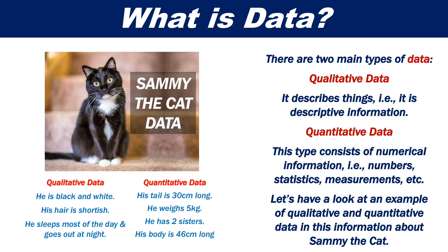There are two main types of data. Qualitative data, which describes things — that is, it is descriptive information — and quantitative data, which consists of numerical information, that is, numbers, statistics, measurements, etc.